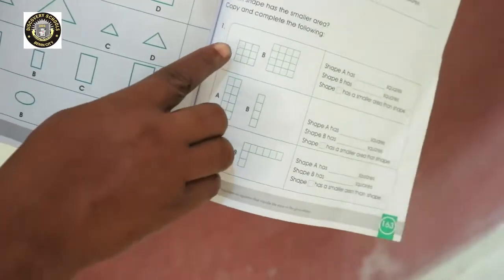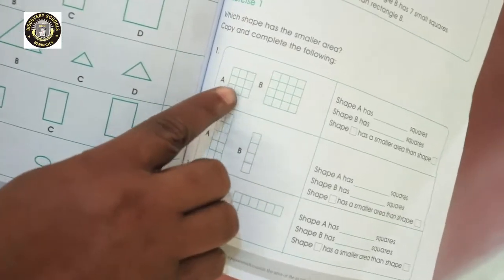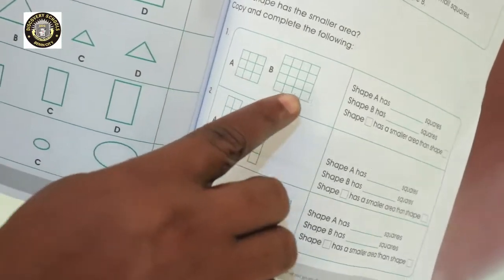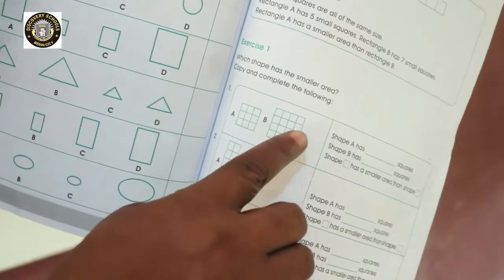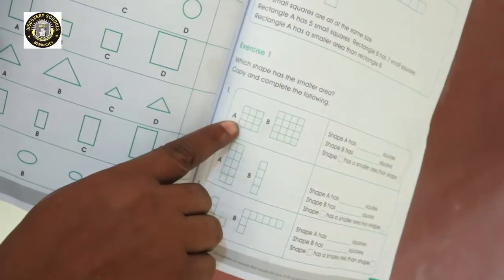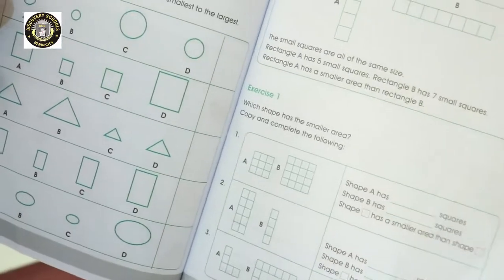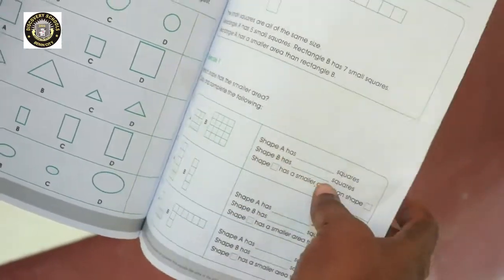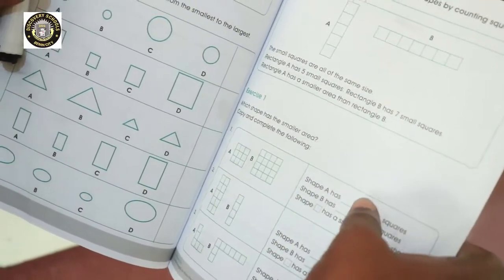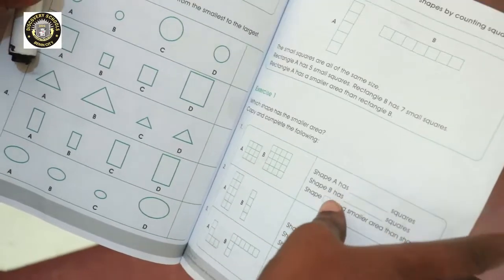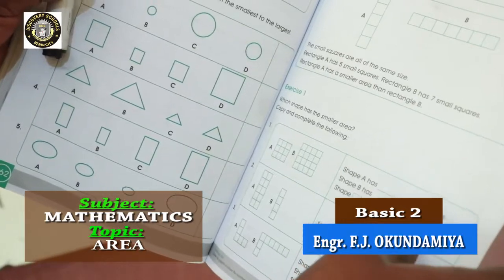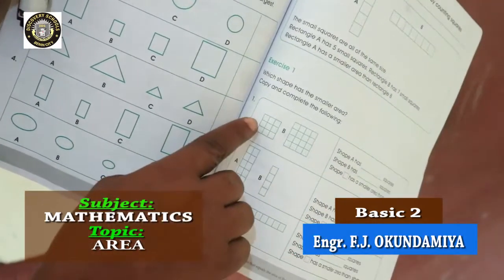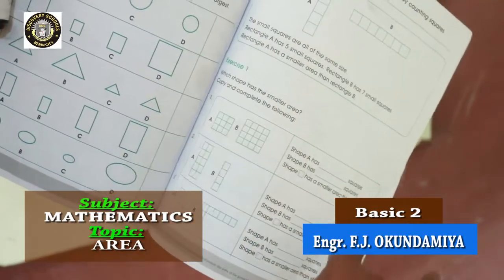If you look at shape A. If you count. 1, 2, 3, 4, 5, 6, 7, 8, 9. It has 9. Shape B. 1, 2, 3, 4, 5, 6, 7, 8, 9, 10, 11, 12, 13, 14, 15, 16. The area of A is 9. The area of B is 16. So, shape A has dash square. Shape A has what? 9 square. Shape B has 16 squares. So, shape dash has a smaller area than shape dash. So, shape A has a smaller area than shape B. So, you put A here. You put B here.